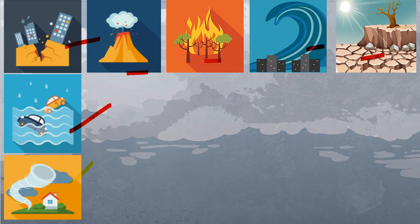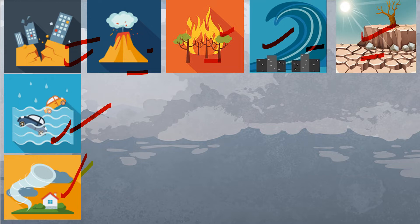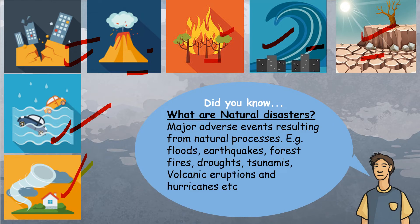As you can see in the diagrams here, you can identify some of them easily. This one is a volcano eruption, this one is a forest fire, this one is a tsunami, this one is drought, this is earthquake, this is flood, and this is hurricane. These are all known as natural disasters. A natural disaster is a major adverse event caused by a natural process. Examples are floods, earthquakes, forest fires, droughts, tsunamis, and volcanic eruptions.